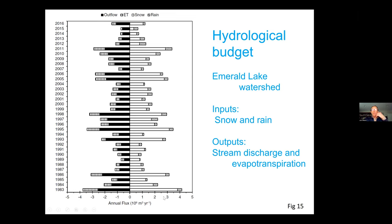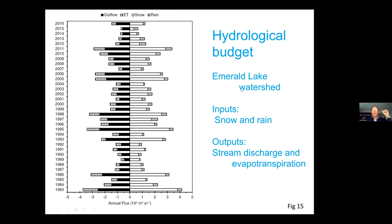When you have these data, you can do a series of calculations to determine what we call a hydrological budget. This shows a series of bar graphs going from 1983 to 2016. Think about a bank account — what goes into a watershed is mainly snow, and then some rain in the summer. What goes out is stream discharge and water that evaporates, is transpired, or sublimates from the snow. The black bar is water running out the stream; the vertical cross-hatching is water that has evaporated or sublimated; the clear bar is snow input; and the cross-hatch bar is from rain. In very low snow years like 2012, rain contributed about 40% of the water input and snow was quite low.